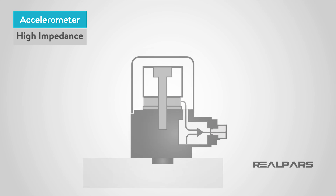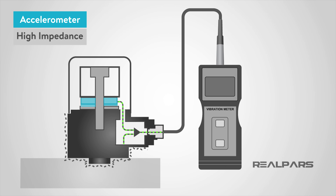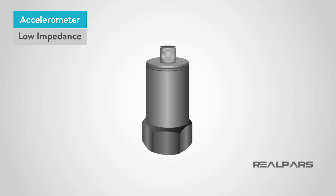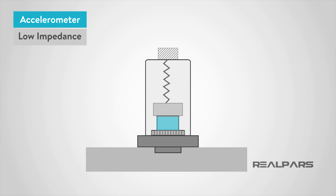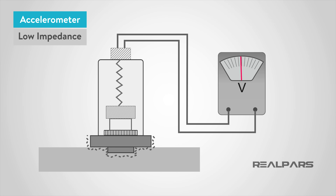High impedance accelerometers produce an electrical charge which is connected directly to the measurement instruments. They require special accommodations and instrumentation, so they are found in research facilities or high temperature applications. Low impedance accelerometers have a charge accelerometer as their front end, as well as a built-in microcircuit and transistor that converts that charge into a low impedance voltage. This type of accelerometer easily interfaces with standard instrumentation, which makes it commonly used in the industry.